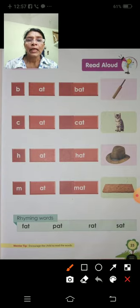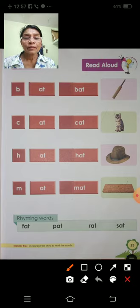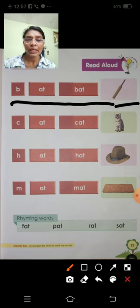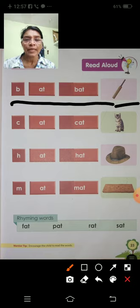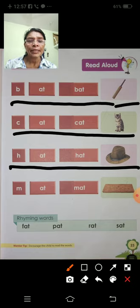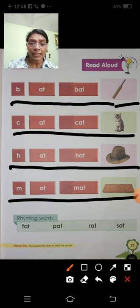Next, we will learn A-T words. B-A-T, Bat. Bat means balla — hum cricket khelte hain, cricket khelne ke liye kya use karte hain? Bat, B-A-T. C-A-T, Cat. Cat means billi. H-A-T, Hat. Hat means topi. M-A-T, Mat. Mat means chatai.